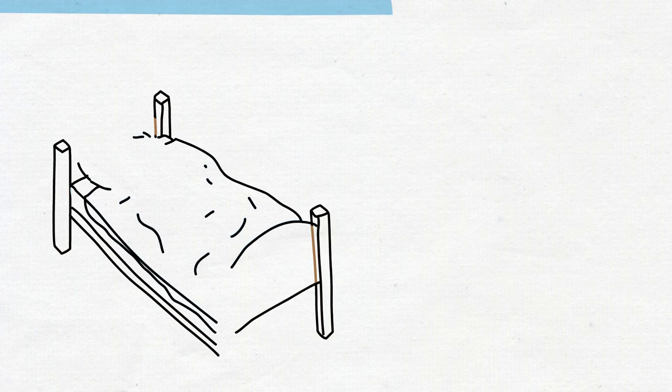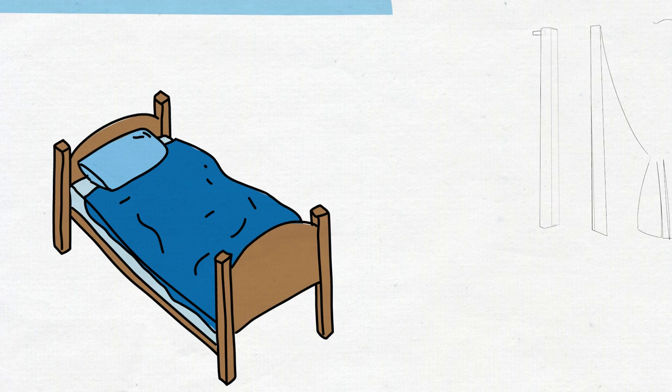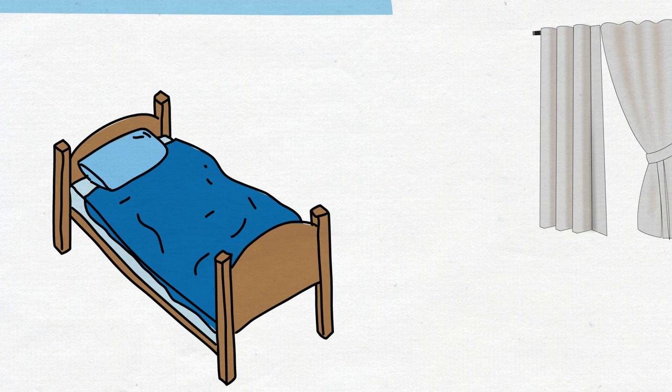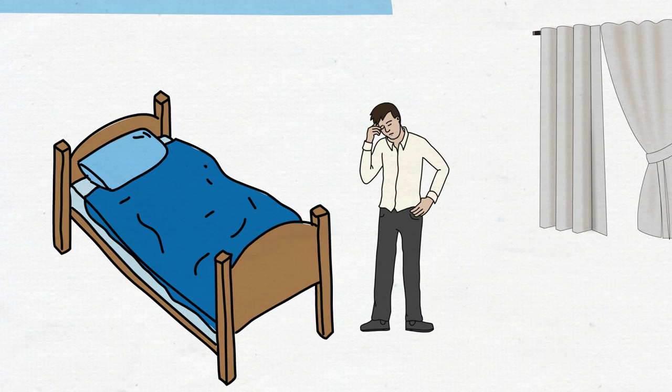That night, General Zaroff is back in his mansion. He is annoyed with the thought of having to replace Even and he is slightly irked because one of his prey has escaped. He goes up to bed and switches on the light.